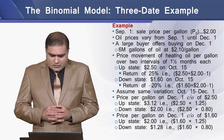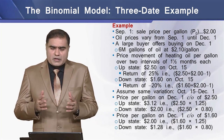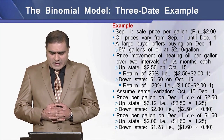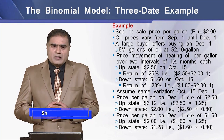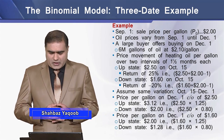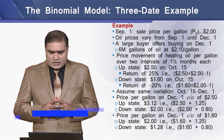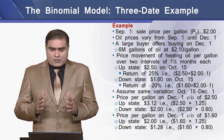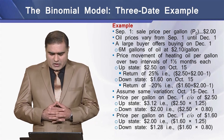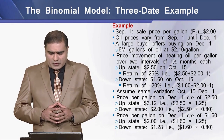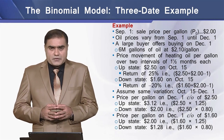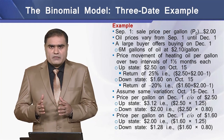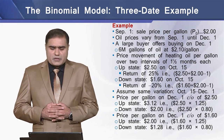In this example, on September 1 we assume the sale price per gallon of oil is $2, and oil prices vary from September 1 till December 1. A large buyer offers the seller 6 million gallons of oil at $2.10 per gallon on December 1. Looking at the price movement over 1.5-month intervals, there is an upstate price of $2.50 per gallon on October 15, giving a return of 25%, and a downstate price of $1.60 on October 15, giving a negative return of 20%.